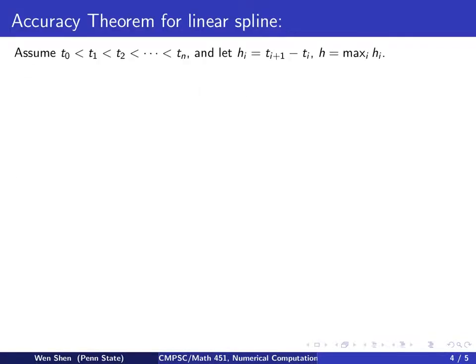Let's now examine the accuracy theorem for linear spline interpolation. Assume we have a sorted set of knots. Let h_i denote the interval length between two neighboring knots, t_{i+1} - t_i. We also denote h as the maximum of all h_i's.